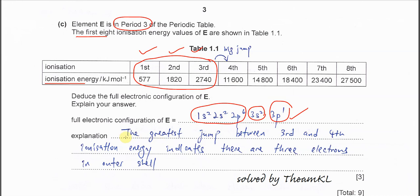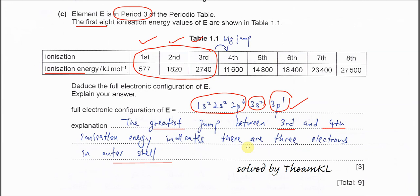Okay. Explain. So you just need to explain why. Because there is a greatest jump or big jump between the third and the fourth. IE indicates there are 3 electrons in outer shell, or 3 valence electron. Okay. That's all for this question. Thank you.